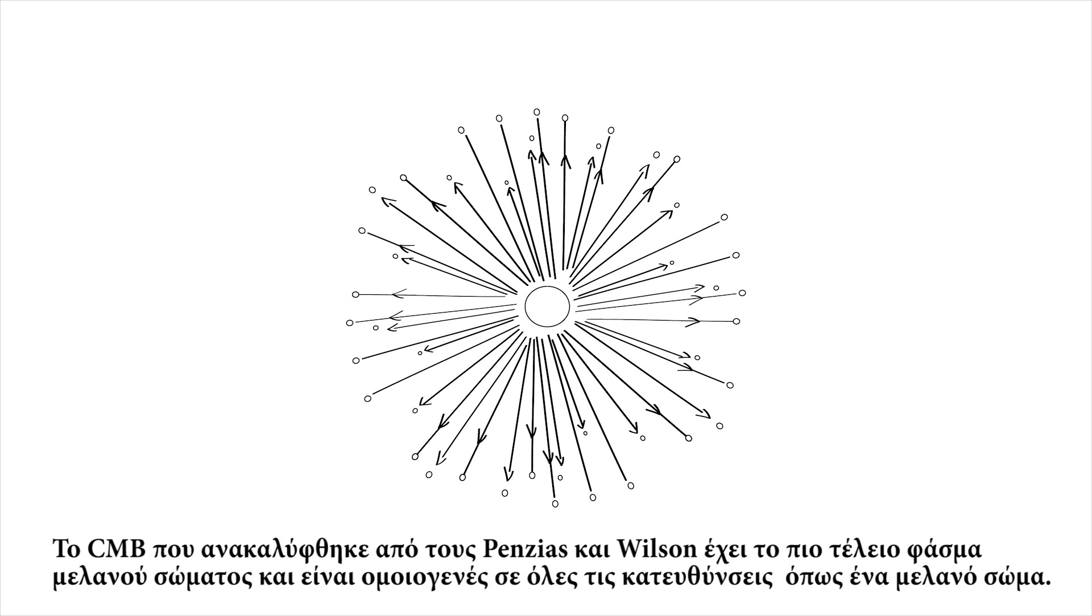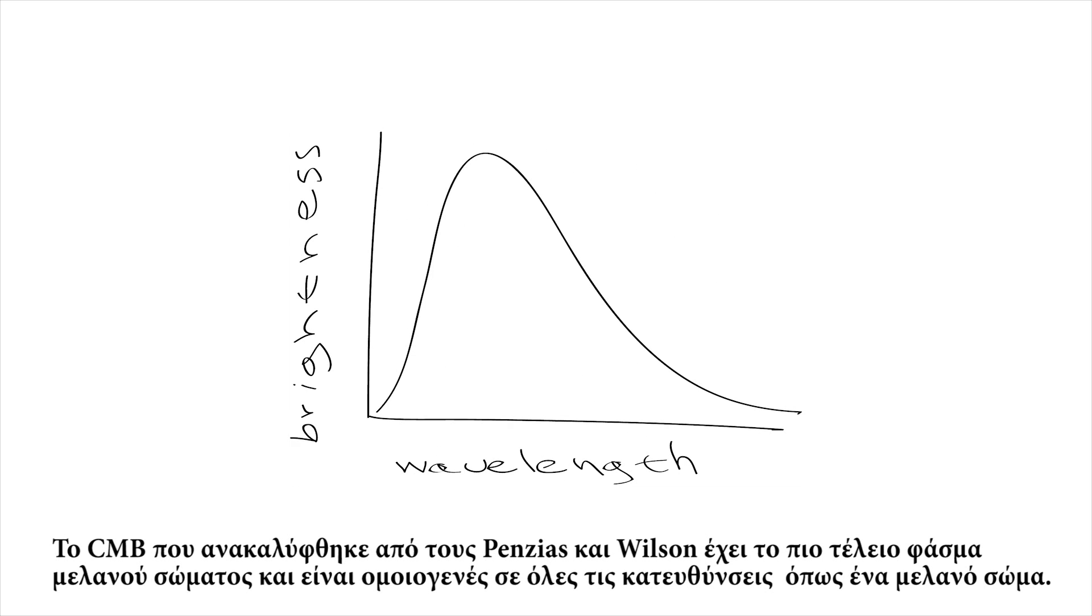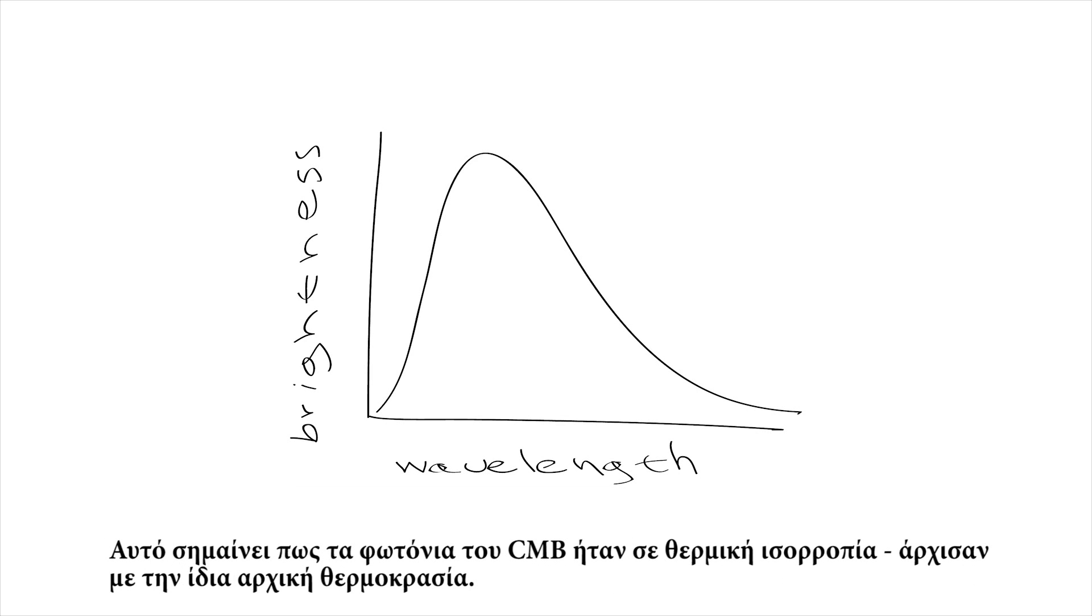The CMB, discovered by Penzias and Wilson, has the most perfect black body spectrum and is uniform in all directions like a black body. This means that the CMB photons were in thermal equilibrium, they started with the same temperature.